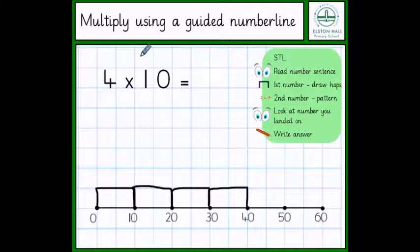The second number tells us what pattern we're counting in. And on a guided number line, this will already be filled in for the children. And here we're going up in 10s.